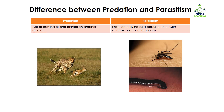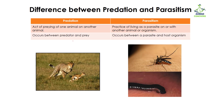In case of parasitism, it is a practice of living as a parasite on or within another animal or organism. It means that the parasite is going to live on the surface or inside the body of an organism.